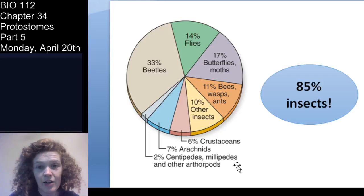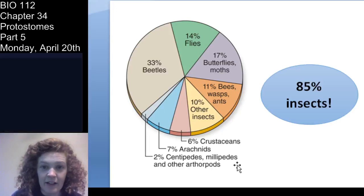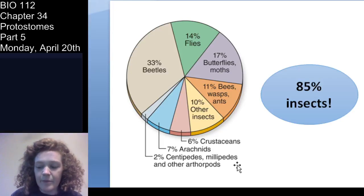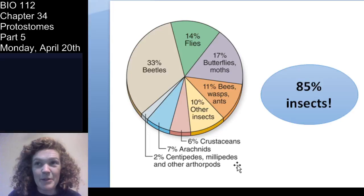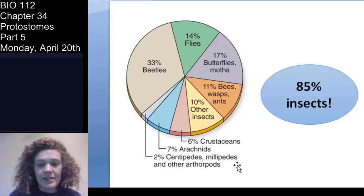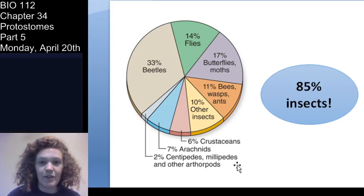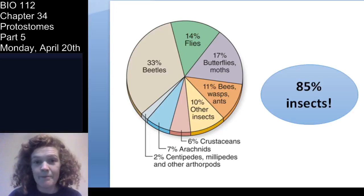85% of arthropods are insects, and arthropods are the most successful phylum on Earth. A good third of that is beetles. To help you remember that: J.B.S. Haldane is a very famous physiologist and biostatistician. When asked what his studies revealed about the creator, he said he has an inordinate fondness for beetles — because most of the very successful phylum consists of coleopterans, or beetles.